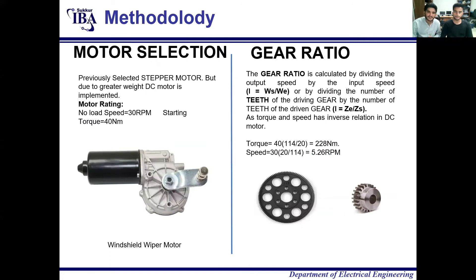As mentioned earlier, we first selected a stepper motor, but it had insufficient torque. That's why we selected a windshield wiper motor with a torque of 40 Nm. However, our project requires around 200 Nm of torque, so we selected gears. The secondary gear has 114 teeth and the primary gear has 20 teeth. Based on this calculation, we achieve 228 Nm torque — 200 Nm is the minimum required load torque, and 28 Nm is the acceleration torque. Our speed will be 5.26 revolutions per minute based on this gear ratio.